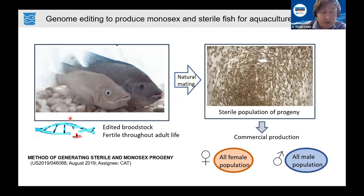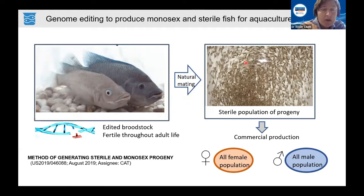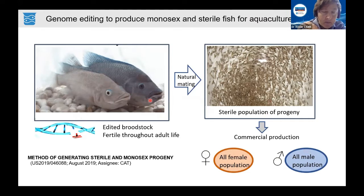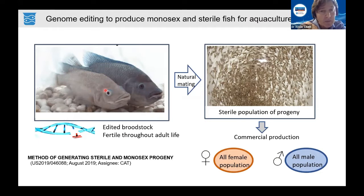About eight years ago, we started working on this seemingly improbable idea. We wanted to generate an edited line of fish that can breed naturally and only produce a sterile population of progeny of a single gender — either an all-male population or all-female population. This was a difficult nut to crack, but we eventually succeeded. Today you will learn how we created those lines and how the sterility trait can be propagated across generations.